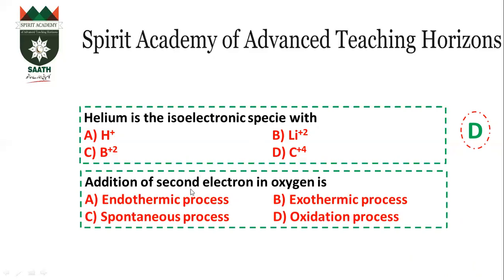This question is about the addition of a second electron to oxygen. Dear students, when a second electron is added, the process is endothermic because the atom already has a negative charge, and the additional negative charge will be repelled. Energy must be provided to overcome this repulsion. The answer will be A.